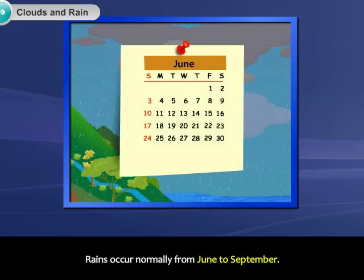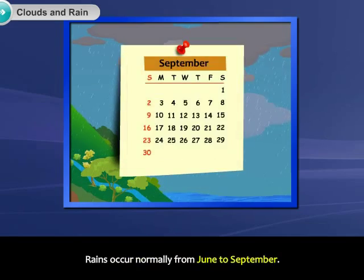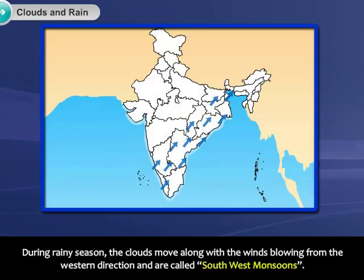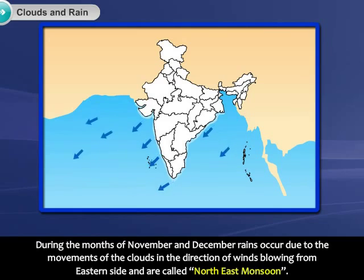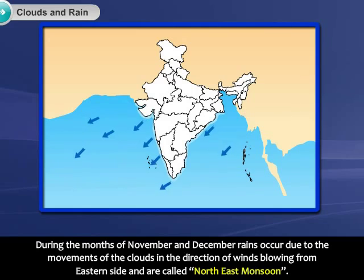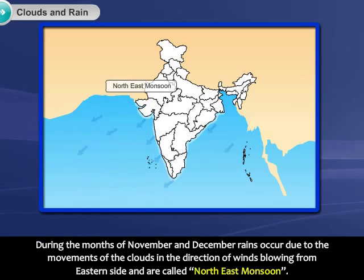Rains occur normally from June to September. During rainy season, the clouds move along with the winds blowing from the western direction and are called southwest monsoons. During the months of November and December, rains occur due to the movements of the clouds in the direction of winds blowing from the eastern side, and are called northeast monsoon.